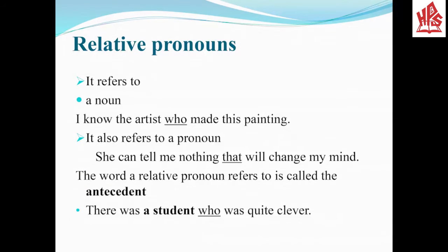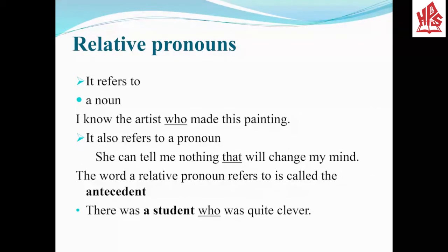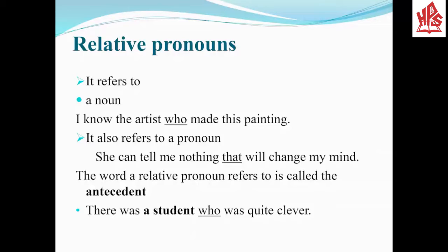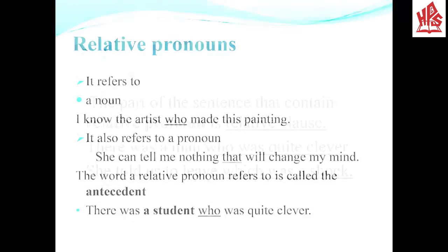Relative Pronouns refer to a noun. For example: I know the artist who made this painting. Here, who is a Relative Pronoun and artist is a noun. Relative Pronouns also refer to a pronoun. For example: She can tell me nothing that will change my mind. Here, that is a Relative Pronoun and nothing is a pronoun. The word a Relative Pronoun refers to is called the antecedent. For example: There was a student who was quite clever — here, student is the antecedent.